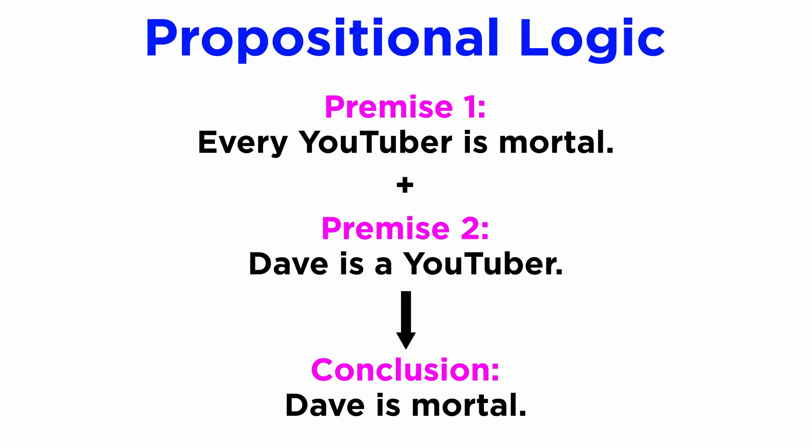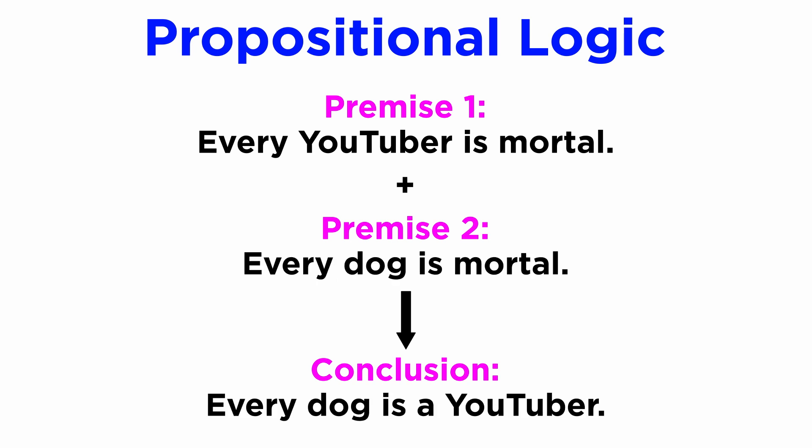Let's take our argument, every YouTuber is mortal, Dave is a YouTuber, thus Dave is mortal. Now let's compare that with, every YouTuber is mortal, every dog is mortal, thus every dog is a YouTuber.